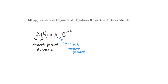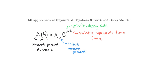E is just the natural base — it's the irrational decimal approximately 2.7 that goes on forever. K here is our growth rate or decay rate. And T is our variable, like X, and it represents time. Time can be measured in minutes, seconds, hours, days, years — whatever unit you need.